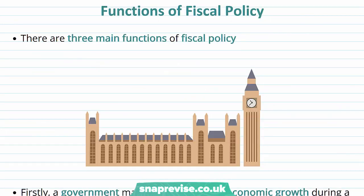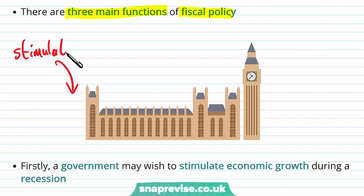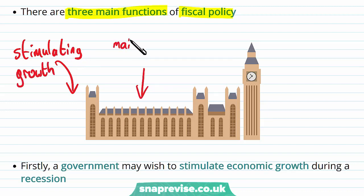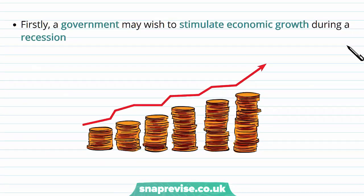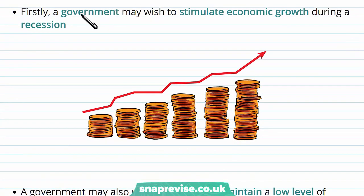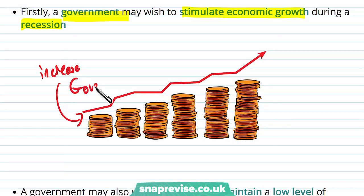Now let's move on to the functions of fiscal policy. There are three main functions: stimulating growth, maintaining inflation, and stabilizing the economy. First, a government will wish to stimulate economic growth through a recession. AD includes government spending, and since AD is linked to our GDP calculation, if we increase government spending, we will increase AD and therefore increase our economic growth.